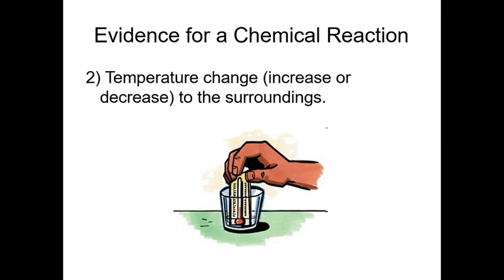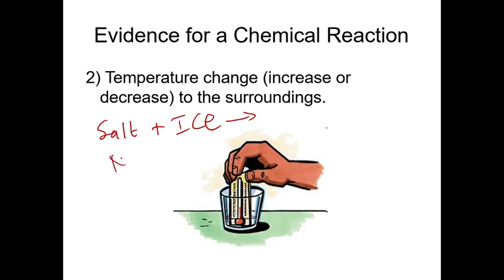The second evidence is temperature change. When a chemical reaction takes place, the temperature can either increase or decrease relative to its surroundings. A simple experiment you can do is take salt and add it to ice. Measure the temperature of the ice before you pour the salt, then measure again after. You'll see the temperature decreases — it's even lower than before. That reaction is NaCl + H₂O, and that's how some reactions change temperature.